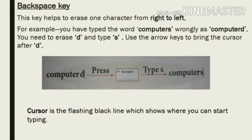The next special key is the backspace key. This key helps to erase one character from right to left. For example, if you have typed the word 'computers' wrongly as 'computed', you need to erase D and type S. Use the arrow keys to bring the cursor after D. The cursor is the blinking black line which shows where you can start typing.